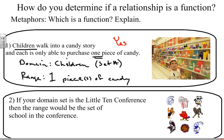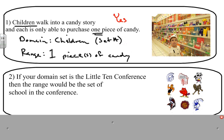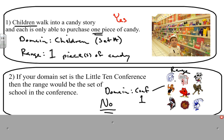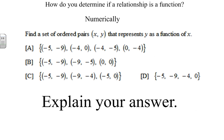Another example: if your domain is the Little Ten conference, then the range would be the set of schools in that conference. The conference itself is one input, but it has nine member schools as outputs. That is not a function, because a function requires one input to produce exactly one output — not one input producing nine outputs. So no, this is not a function.